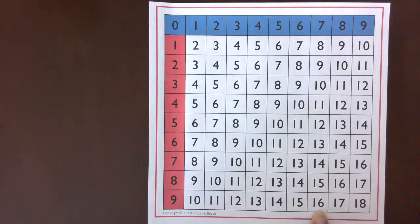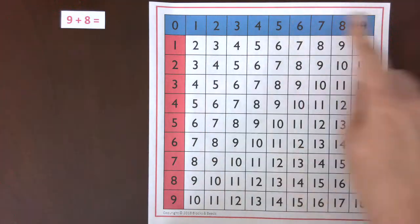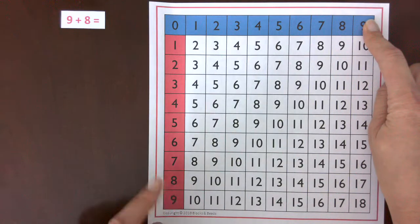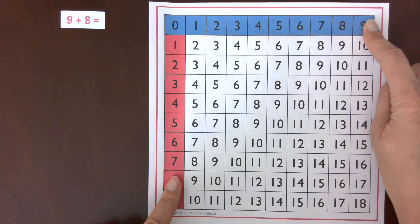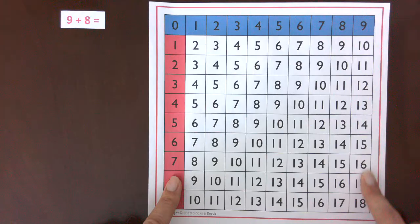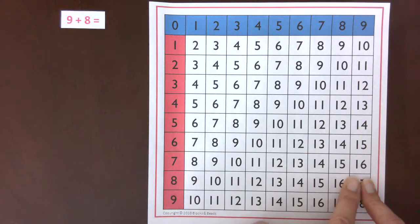Let's do one more: 9 plus 8. We'll find our 9 and our 8, we'll slide down, across, and our sum is 17.